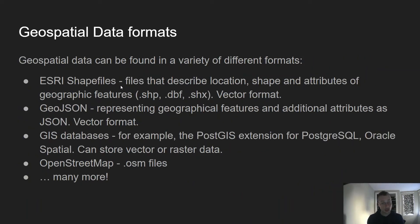How do we actually get geospatial data and import it into libraries like GeoPandas? One way is through different file formats and data sources. Shapefiles are a very common one — they are actually a collection of files that describe locations and shape attributes of geographical features, and they are a vector file format.